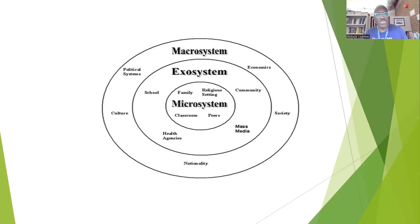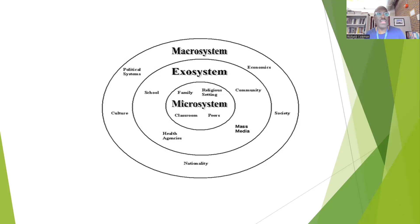As that legislation trickles down to the mesosystem, it impacts our communities — in our state, county, and city, monies become available to fight global warming. Grants will fund projects designed to reduce our carbon footprint. And then for you as an individual at the microsystem, if you get picked up by one of these new green companies that this legislation has impacted, you can see the relationship that happens between all three systems.